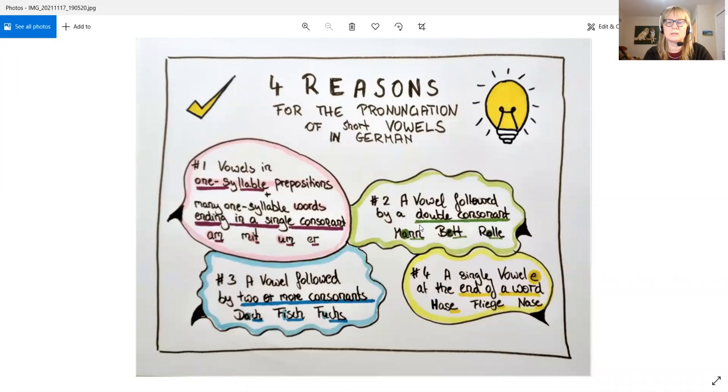Number two: a vowel followed by a double consonant. Mann, Bett, Rolle. So we have here double n, Mann, double t, Bett, double l, Rolle.